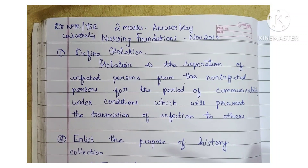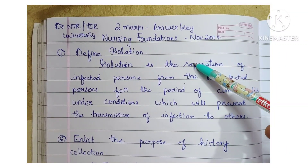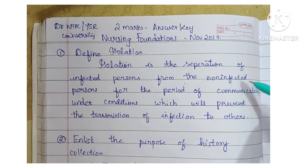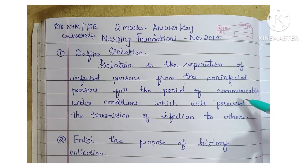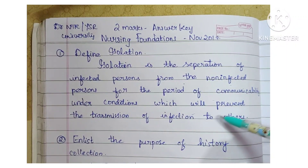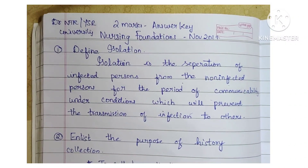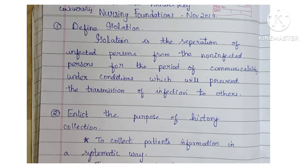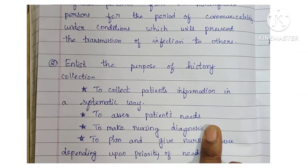Define isolation. Isolation is the separation of infected persons from the non-infected persons for the period of communicability under conditions which will prevent the transmission of infection to others. This is the answer key only — no explanation, just the question and answer you have to write.